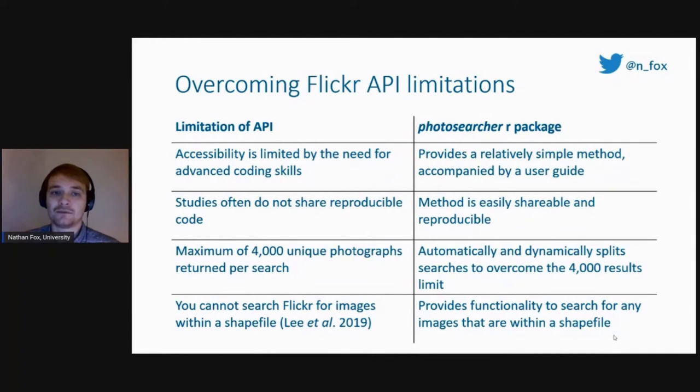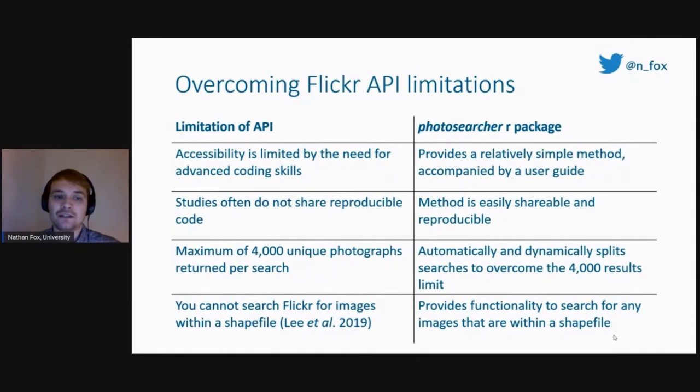One of the biggest limitations with Flickr is that no matter what you search for, it will return a maximum of 4,000 unique images per search. For example, if you're looking for images of trees at a global scale, there could be hundreds of thousands or even millions of photographs, but the Flickr API is actually returning 4,000 unique images and replicating those 4,000 data points over and over again. To overcome this, the photosearch.r package dynamically splits your requests into smaller searches, helping to overcome the 4,000 limit by returning all data that matches your criteria.